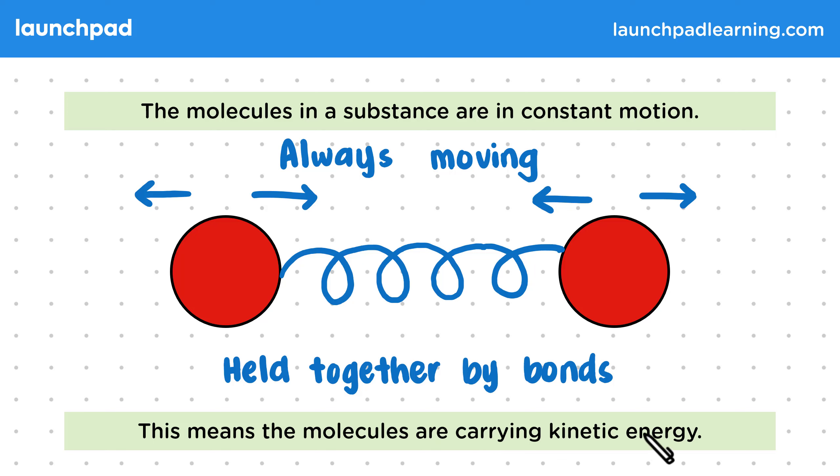Remember that kinetic energy is a type of energy held by moving objects. So since the molecules are always in motion, they must have kinetic energy. But what's the relation between this kinetic energy and the state of matter of a substance? Well, let's see by going through each state and looking at how the molecules move.